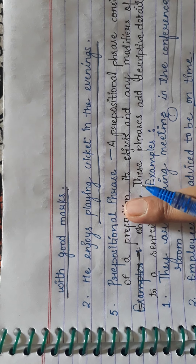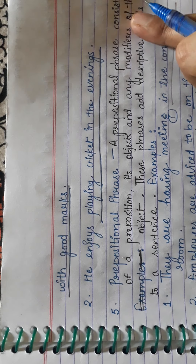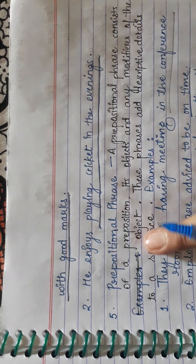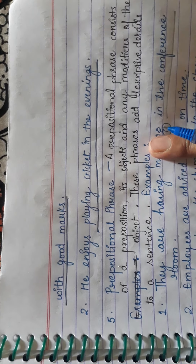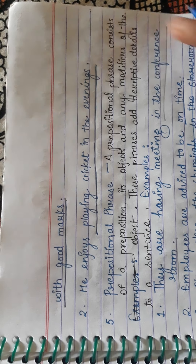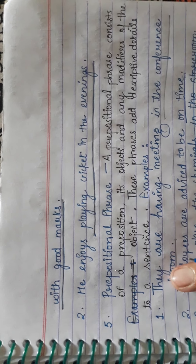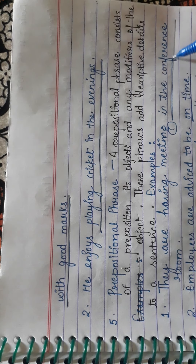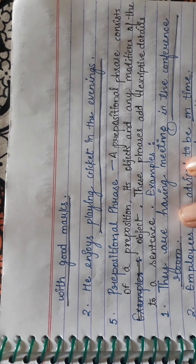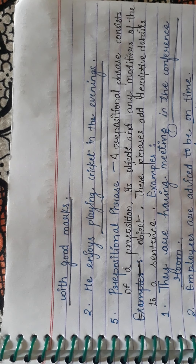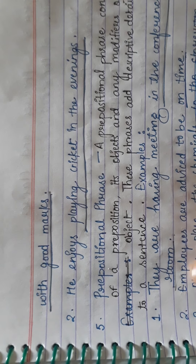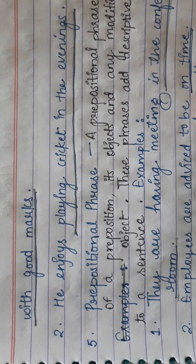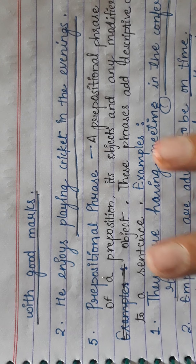Now, prepositional phrase. A prepositional phrase consists of a preposition, its object, and any modifiers of the object. These phrases add descriptive details to a sentence. Example: 'They are having a meeting in the conference room.' Here, 'in the conference room' is a prepositional phrase. Second example: 'Employees are advised to be on time.' Here, 'on time' is a prepositional phrase.